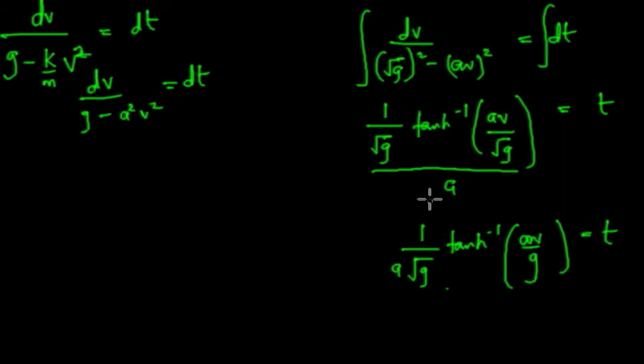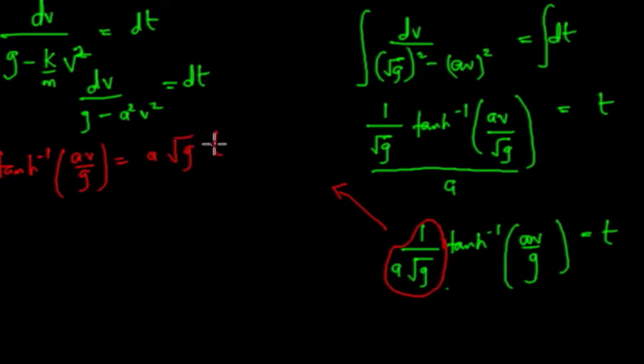So to solve for v, we need to remove every barrier around v. So the first barrier I want to remove is this man here. So to remove this man, I cross multiply both sides by a root g.